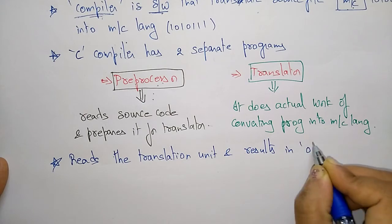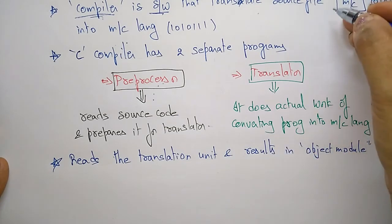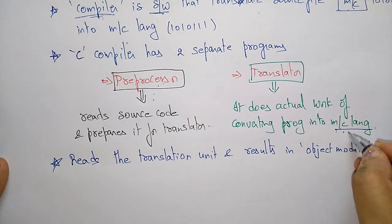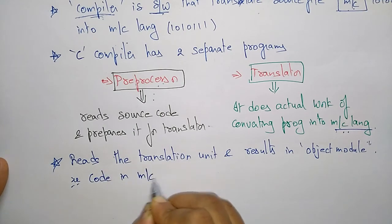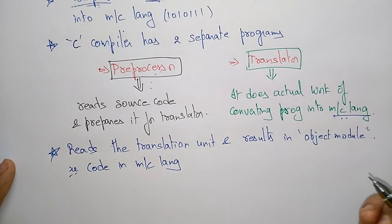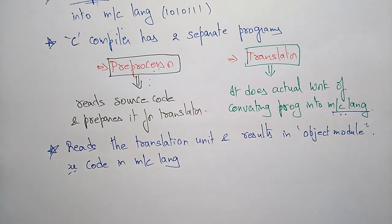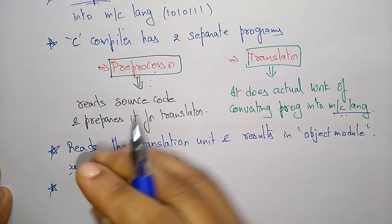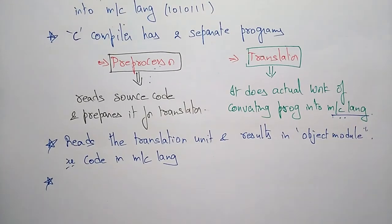The compiler reads the translation unit and results in an object module. Whatever source file has been written will be converted into machine language, and that machine language output is the object module. The object module is code in machine language, saved in the form of a .obj file. However, after compiling, the program is not yet ready for execution. The compiler is only converting the high-level language into machine language — once that conversion is complete, it is not completely ready for execution.